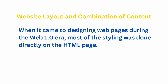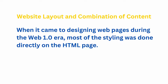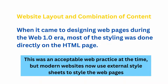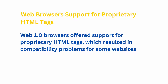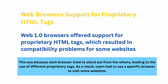Website layout and combination of content: when it came to designing web pages during the Web 1.0 era, most of the styling was done directly on the HTML page. This was an acceptable web practice at the time, but modern websites now use external style sheets to style web pages. Web browser support for proprietary HTML tags: Web 1.0 browsers offered support for proprietary HTML tags, which resulted in compatibility problems for some websites. This was because each browser tried to stand out from the others, leading to the use of different proprietary tags. As a result, users had to use a specific browser to visit some websites.